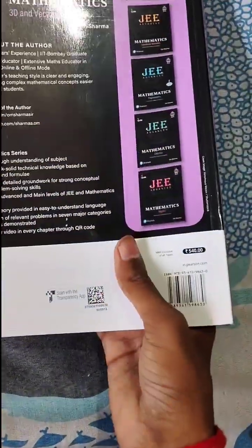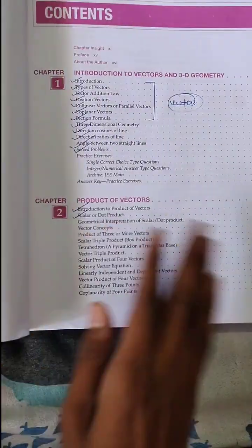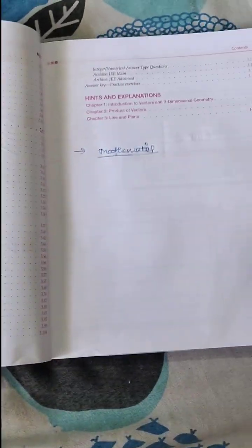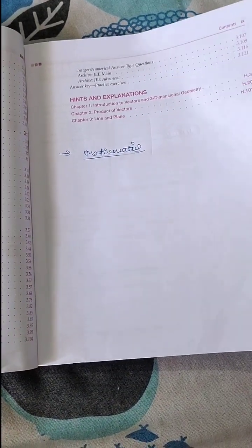So let's see the contents. The contents include introduction to vectors and 3D geometry, product of vectors, and the line and plane. Yes, as you can see, only three chapters are in the book.